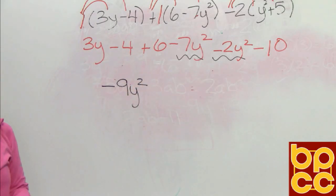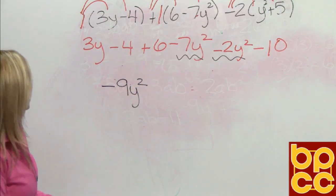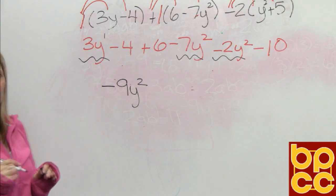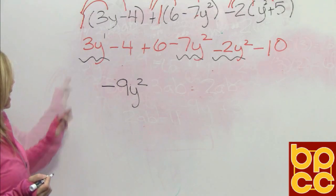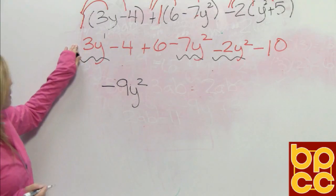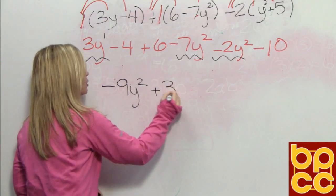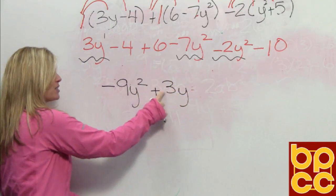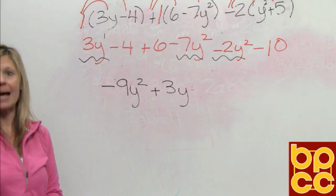After y squared, should come y to the first. So I look, here's my term with y to the first. Remember that 1 is understood. He has nothing else to combine with, so we're just going to write it down. And remember, that 3 is positive, so we write plus 3y. You cannot forget that positive sign. You have to separate the terms by adding and subtracting.